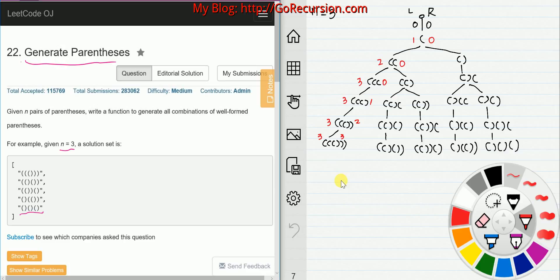The first step we only have one option: we add left parentheses into the string. Then we move to next. Now we have two options. Option one is add left parentheses, we got this one. Option two we add right parentheses into the string, we got this one.